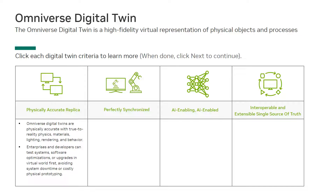Omniverse digital twins are physically accurate with true-to-reality physics, materials, lighting, rendering, and behavior. Enterprises and developers can test systems, software optimizations, or upgrades in virtual worlds first, avoiding system downtime or costly physical prototyping.